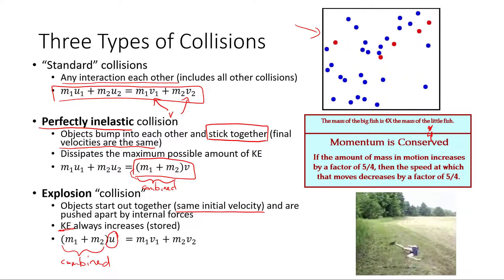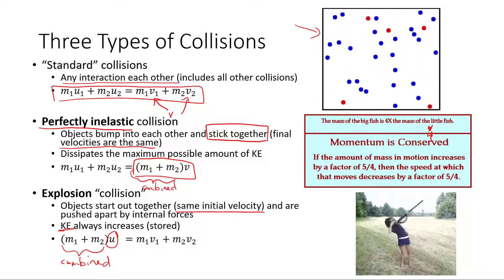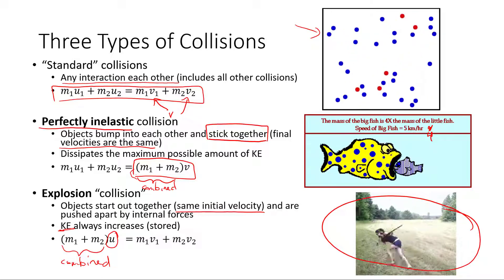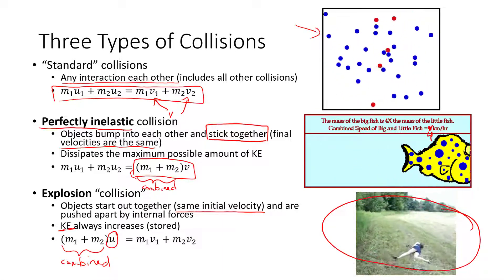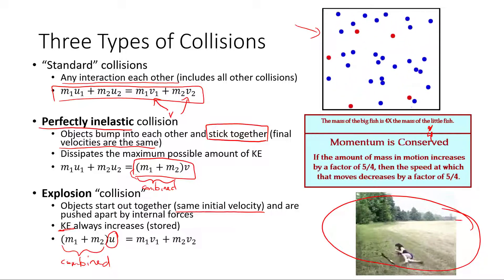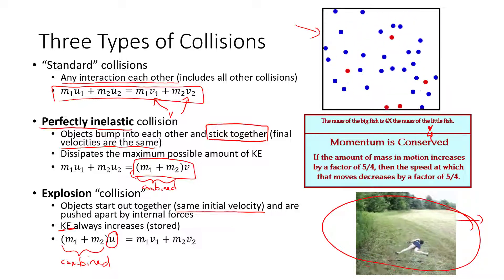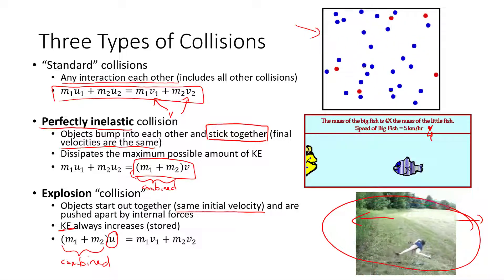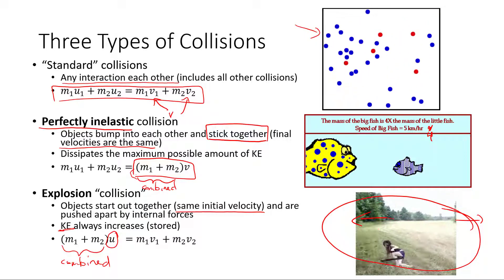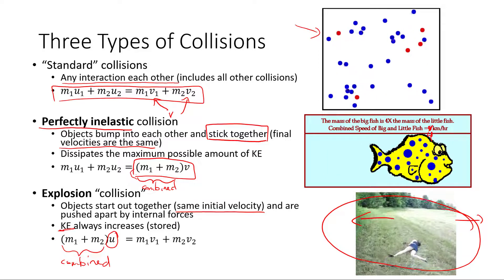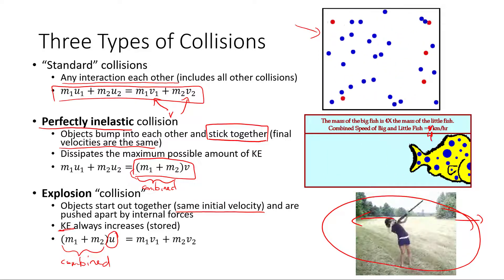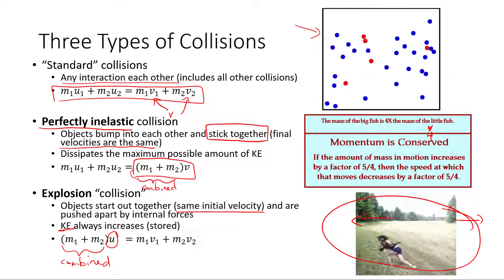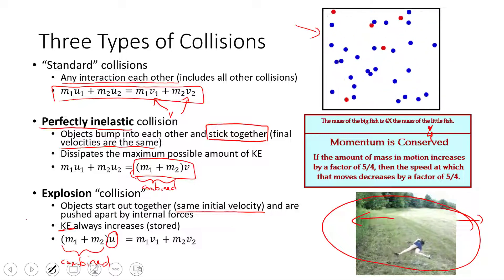Here's an example: when a gun is fired, there is a literal explosion that pushes the bullet to the right, and the gun recoils to the left. The changes in momenta for each object are equal and opposite. You can see this demonstrated by the woman feeling the momentum change from the rifle recoil.